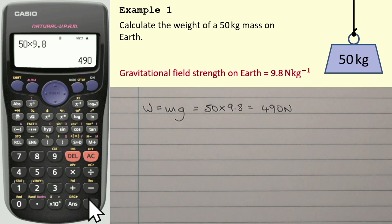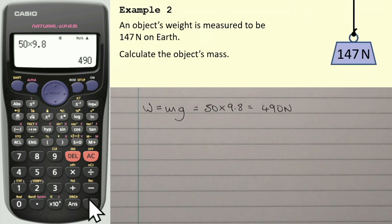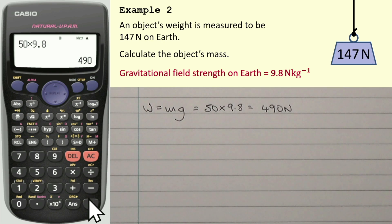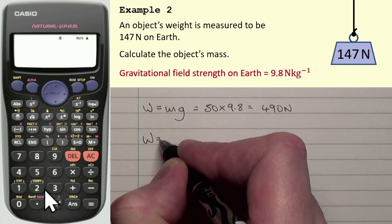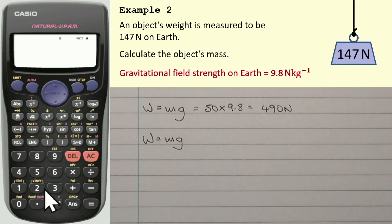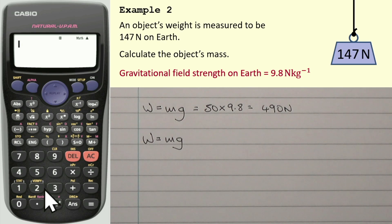Now, for a video on rearranging, we've done none so far — but that's all about to change. In the second question, which looks very similar, an object's weight is measured to be 147 newtons on Earth. Calculate the object's mass. We're going to use exactly the same equation, and again G from the data sheet is 9.8 newtons per kilogram. No matter how you answer the question — whether you rearrange the equation or substitute the values first — I would always say look at the relationship just to make sure you're writing it the correct way.